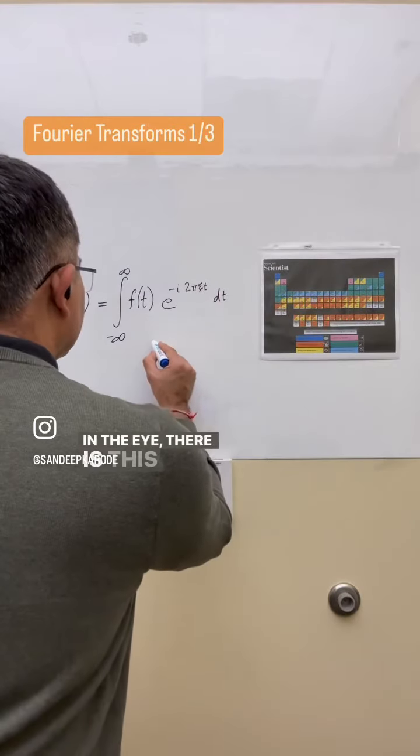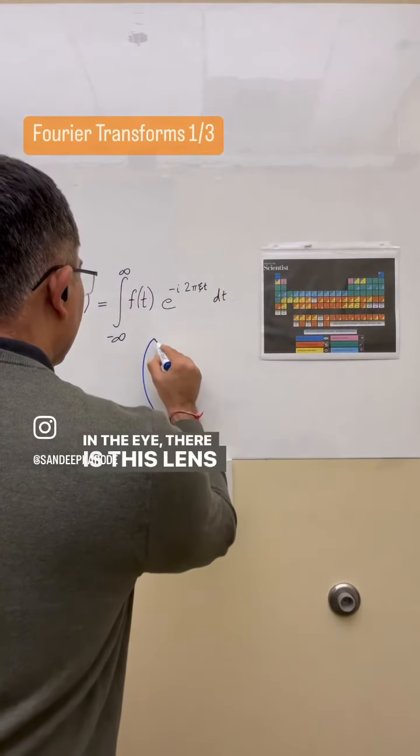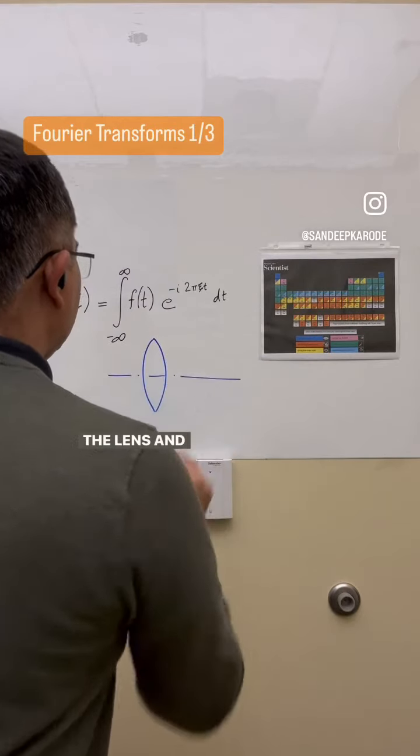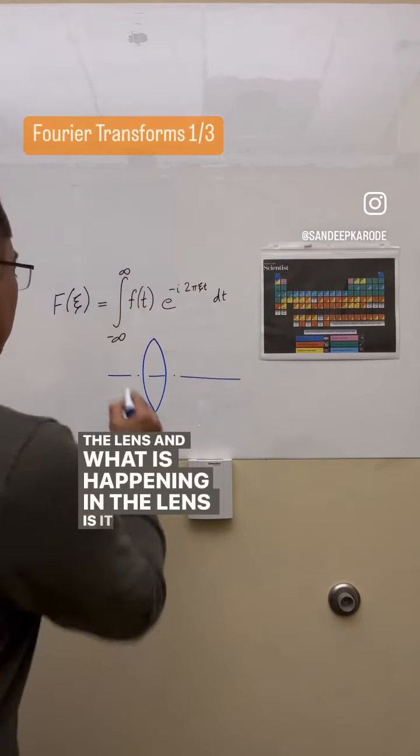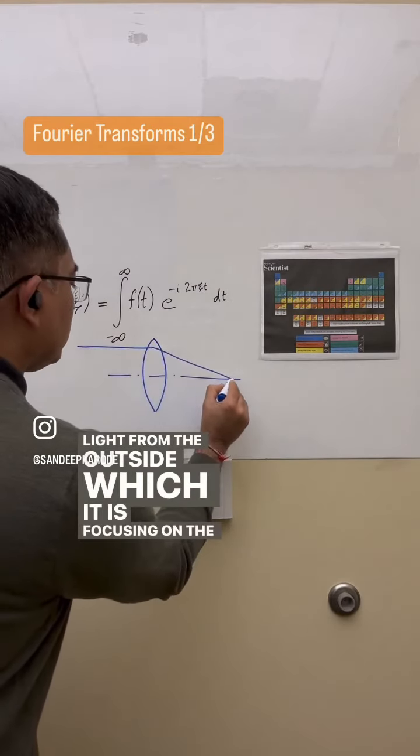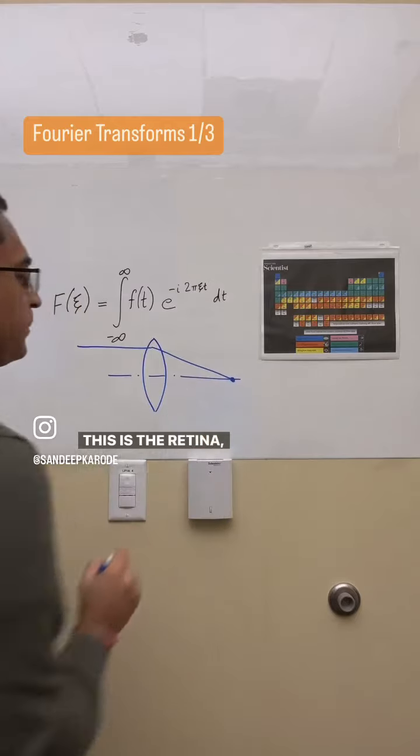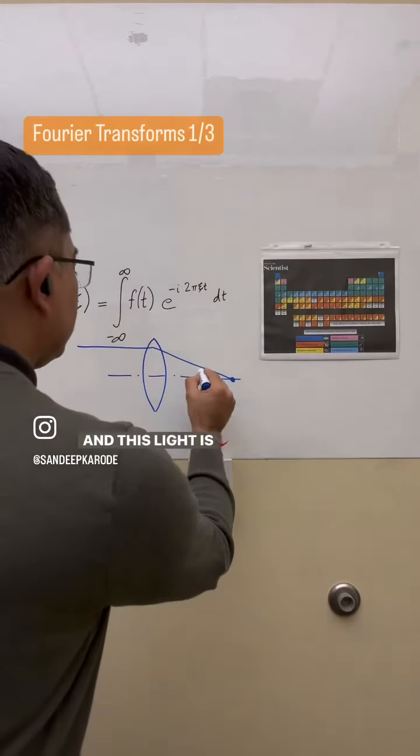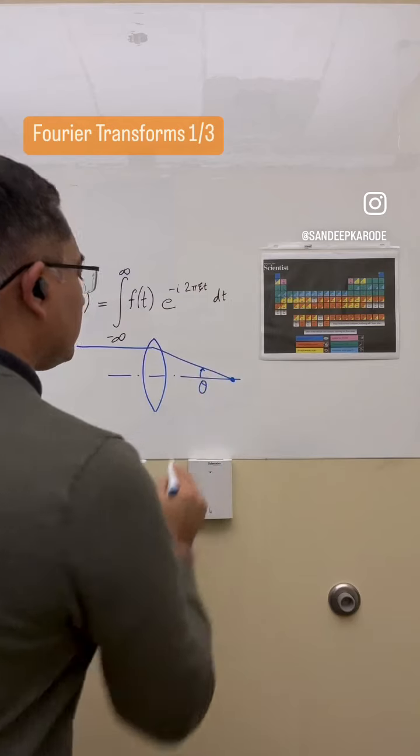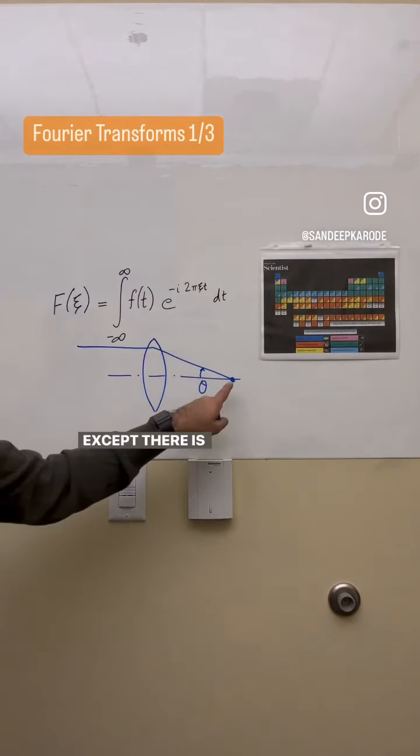In the eye, there is this lens and that's the center line of the lens. And what is happening in the lens is, it is getting light from the outside, which it is focusing on the retina. This is the retina, right? And this light is coming at an angle theta, let's say. Except that is more than one light.